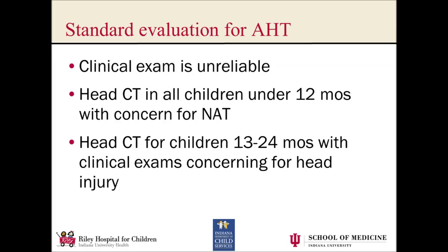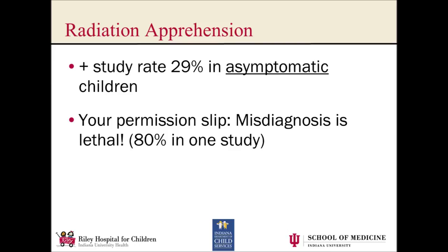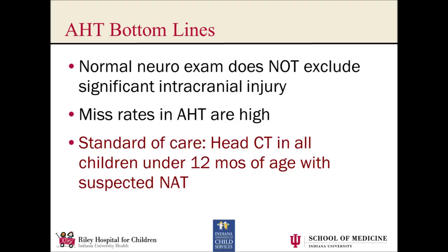A quick word about radiation apprehension: we've all been told we're irradiating too many kids. And that's true — there are a lot of arenas where we really need to rein our imaging in. This is not that scenario. Keep in mind that for occult injury, our positive rate is 30%, and when we miss it, the consequences are catastrophic — up to 80% mortality in one study. So our threshold needs to be low. This is your permission slip to scan them. Normal neuro exam doesn't exclude anything in these kids. Miss rates are high. You need to get a CT when you suspect non-accidental trauma.